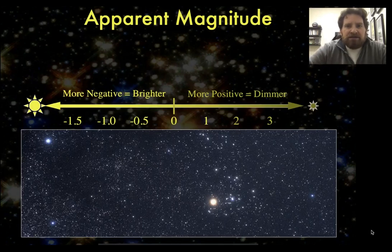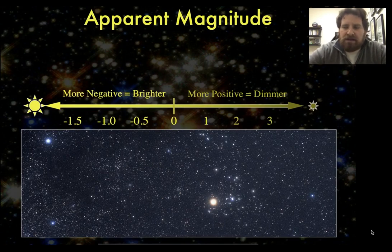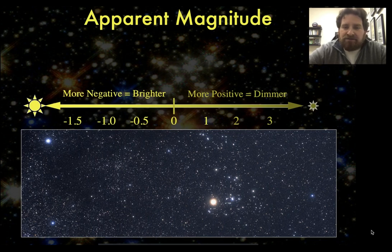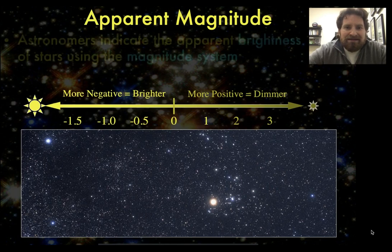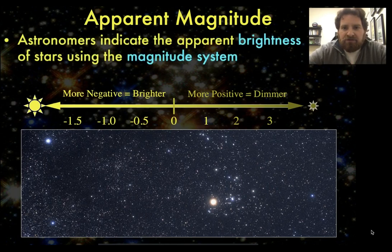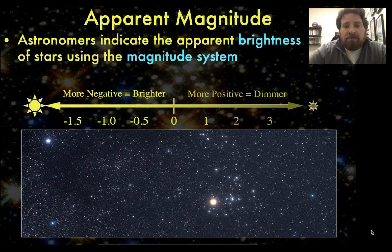Hello, everybody. I just wanted to take a little bit of time to go over one particular aspect of astronomy that astronomers use to quantify the brightness of stars. That's something called the magnitude system. Essentially, the magnitude system is a numbering system that astronomers use to assign a value to the apparent brightness of a star — that is, how bright it appears to the eye.